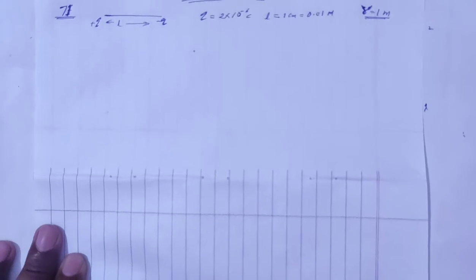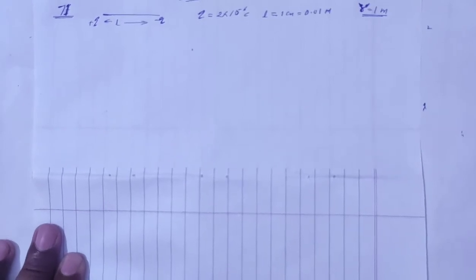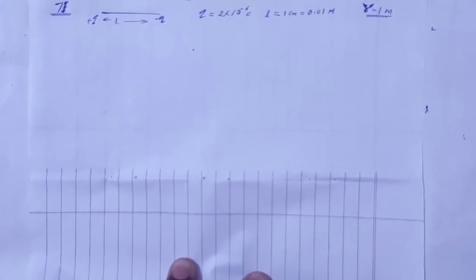HC Verma solution, Chapter 29: Electric Field and Potential, Question number 71. Particles A and B having opposite charges 2×10⁻⁶ and -2×10⁻⁶ are placed at a separation of 1 centimeter. Write down the electric dipole moment of this pair. Calculate the electric field at a point on the axis of the dipole one meter away from the center.